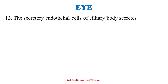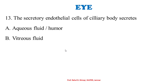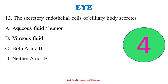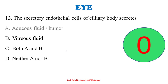The secretory endothelial cells of the ciliary body secrete: A: aqueous fluid or aqueous humor. B: vitreous fluid. C: both A and B. D: neither A nor B. The answer is option A — aqueous fluid or aqueous humor. The ciliary body consists of circular ciliary muscles controlling lens adjustment, and secretory endothelial cells with the unique function of secreting aqueous humor.